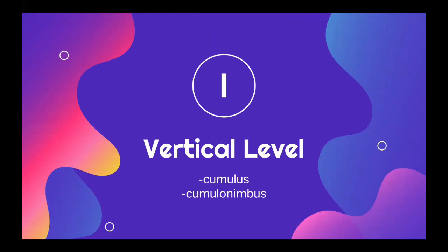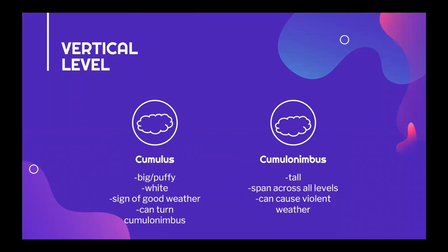And finally, the vertical level of clouds. On this level we have cumulus and cumulonimbus clouds. Cumulus clouds are big, white, and puffy. They're a sign of good weather and they can sometimes grow into a cumulonimbus cloud. Cumulonimbus clouds are very tall — they go from the low level all the way to the top level. These clouds are not as relaxing as cumulus clouds, for they can cause large heavy thunderstorms and even tornadoes.